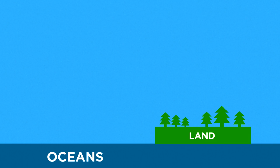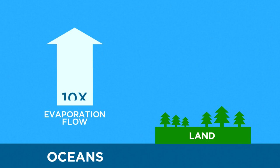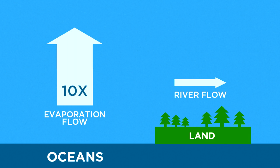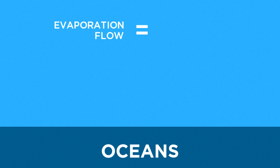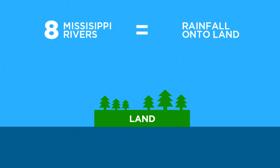Looking at the entire amount of fresh water produced by the sun, 10 times more water flows from the ocean up into the atmosphere by evaporation than through all the rivers on Earth combined. This is equivalent to 75 Mississippi rivers flowing from the ocean up into the sky continuously all year round. But only eight of them deposit their water over the land.